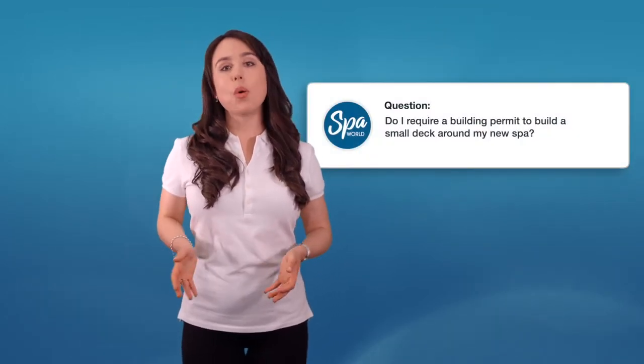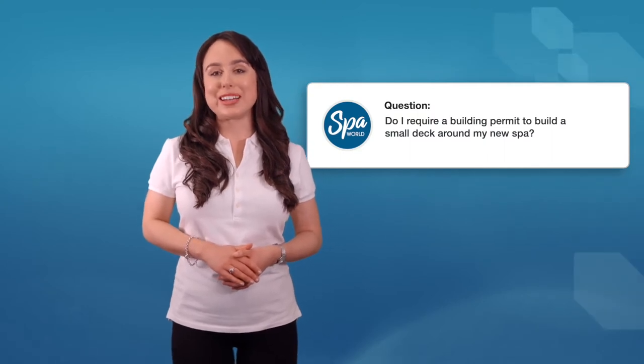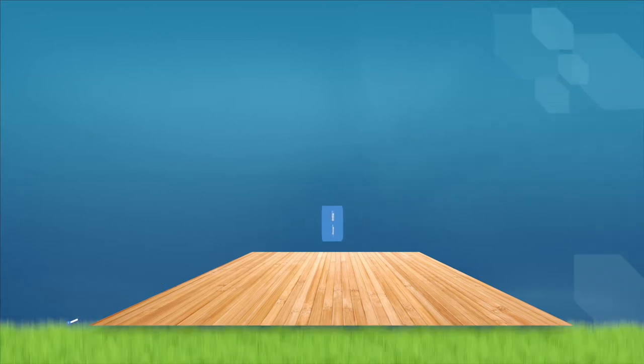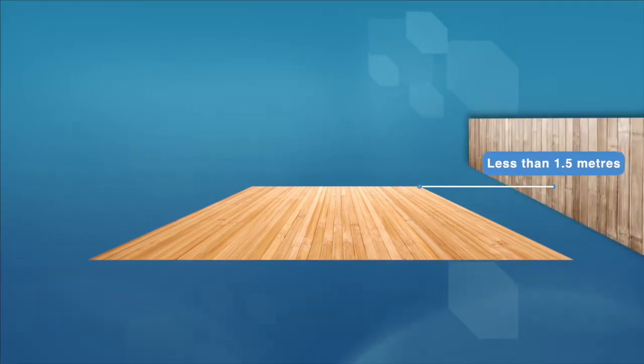Do I require a building permit to build a small deck around my new spa? A building permit may be required for decks that have a floor area greater than 25 square metres, a height greater than 1 metre above existing ground level or located less than 1.5 metres to your boundary.